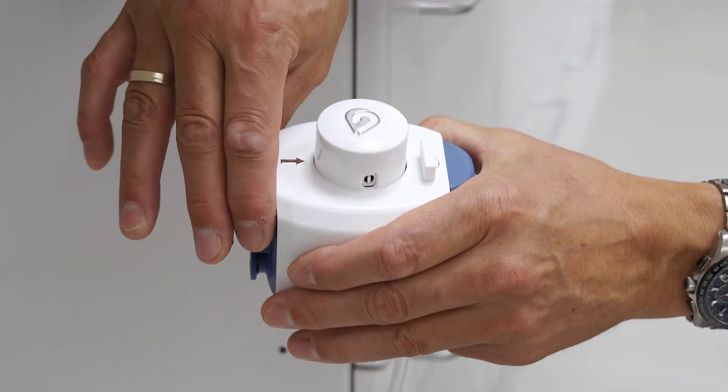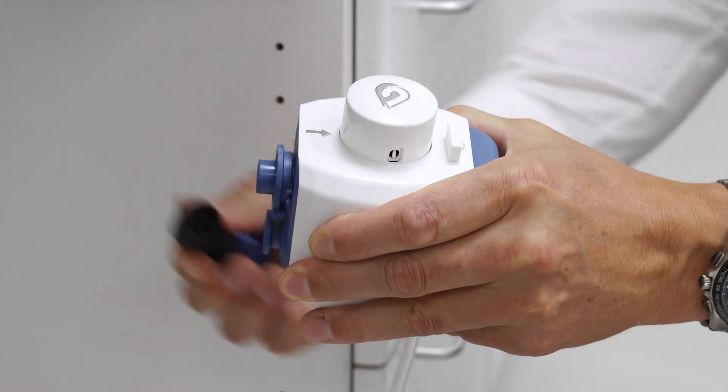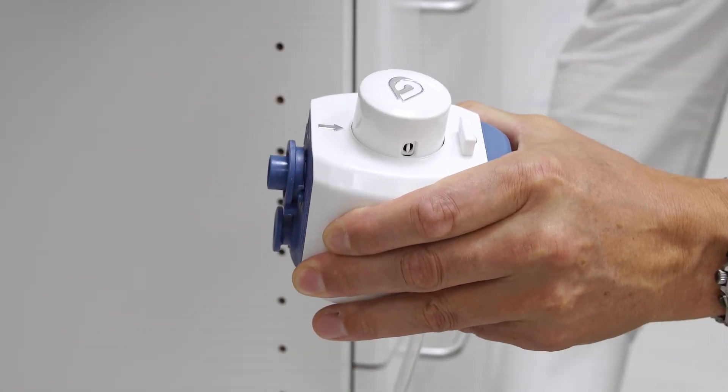Remove the blue clip by turning it 45 degrees and pull it away from the filter head. Replace the elbow with the access hose.